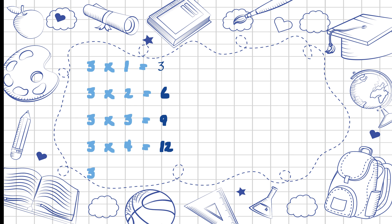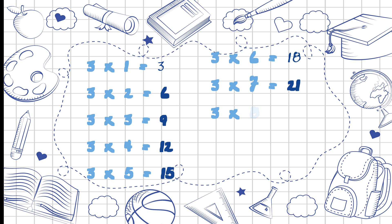3 5s are 15, 3 6s are 18, 3 7s are 21, 3 8s are 24, 3 9s are 27, 3 10s are 30. Thank you.